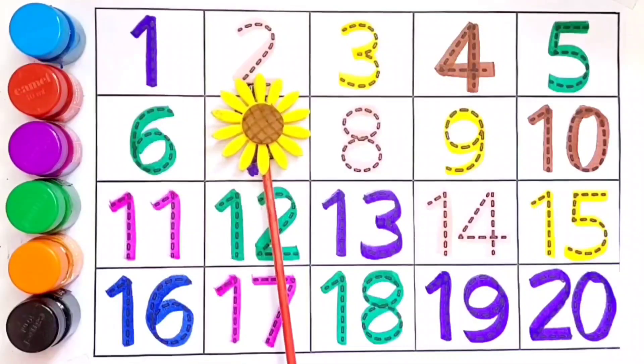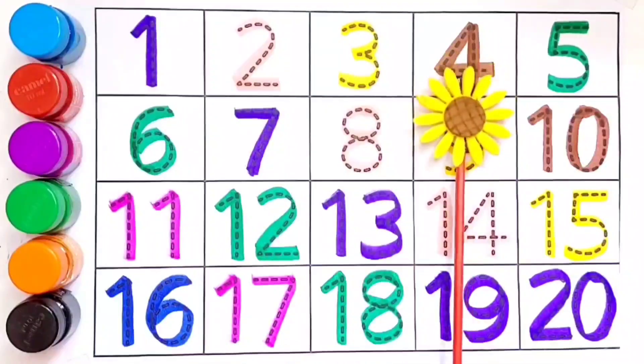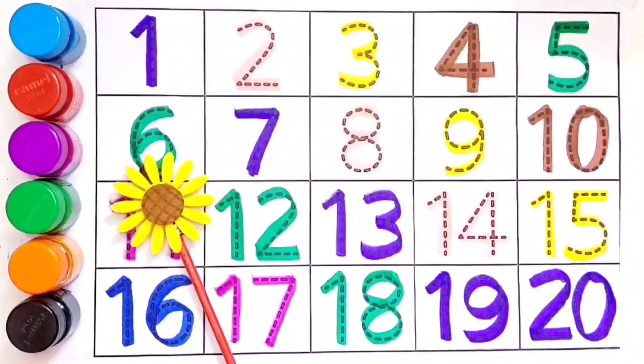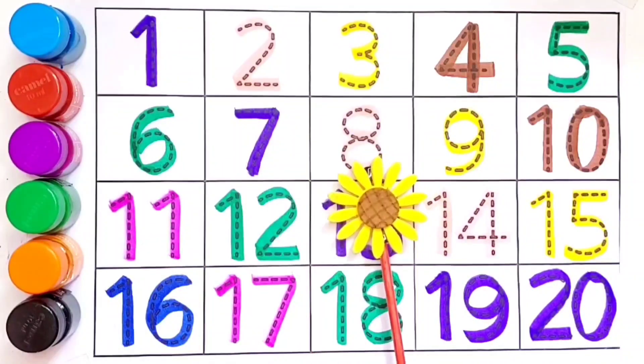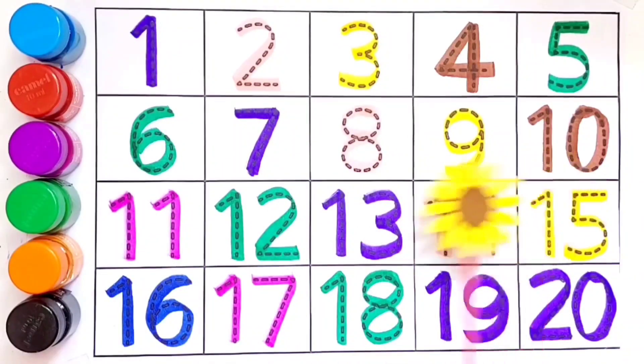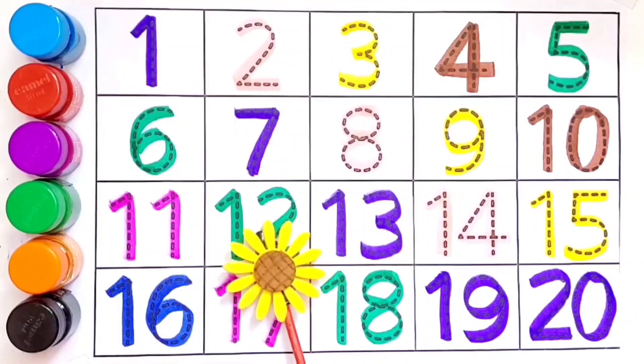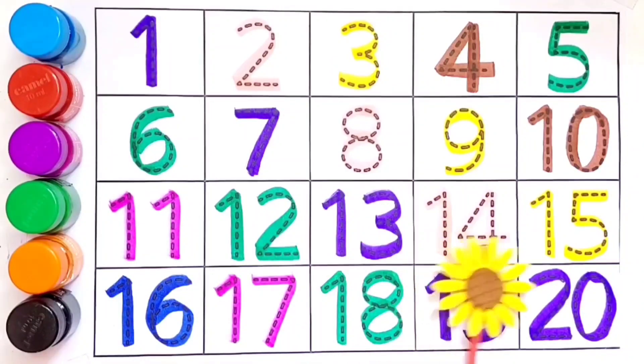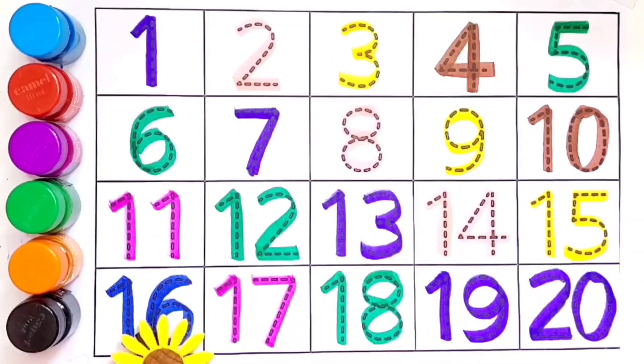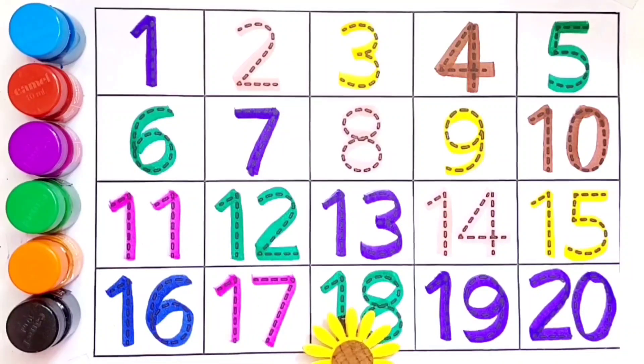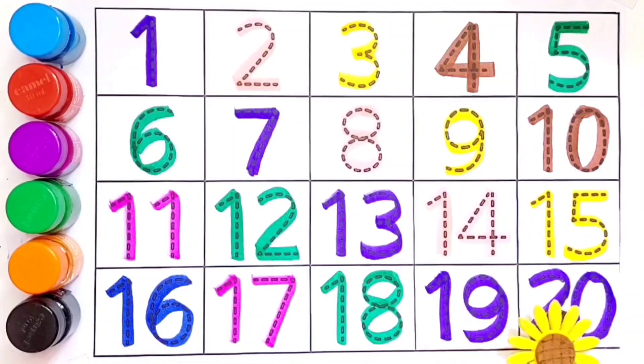1, 2, 3, 4, 5, 6, 7, 8, 9, 10, 11, 12, 13, 14, 15, 16, 17, 18, 19, 20.